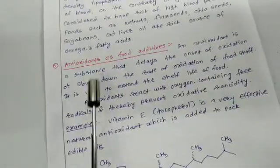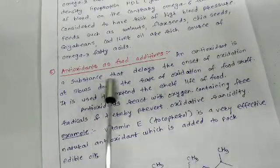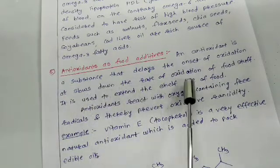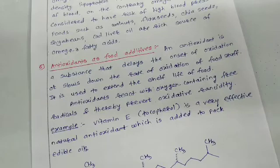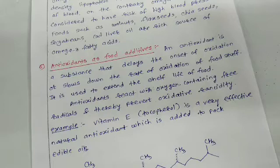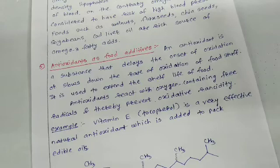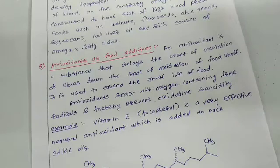Now let's go for the next part of this chapter. Fifth point: antioxidants as food additives. An antioxidant is a substance that delays the onset of oxidation or slows down the rate of oxidation of foodstuff. Those substances are known as antioxidants.